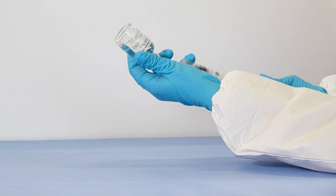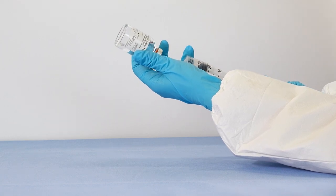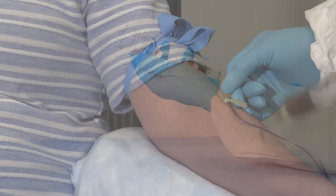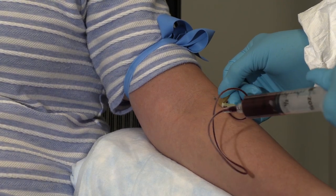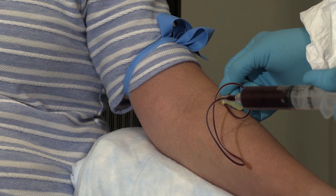Fill a 60-milliliter sterile syringe with 6 milliliters of citrate anticoagulant. Then draw 54 milliliters of blood from the patient, filling the syringe to 60 milliliters.